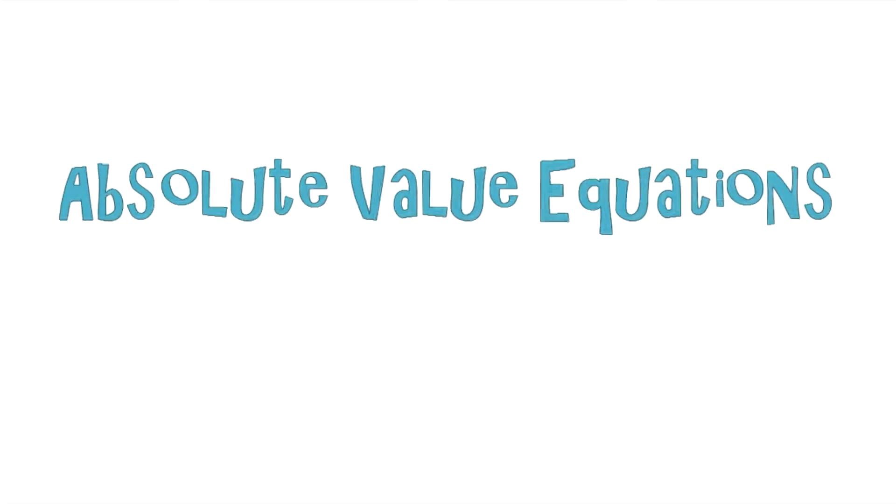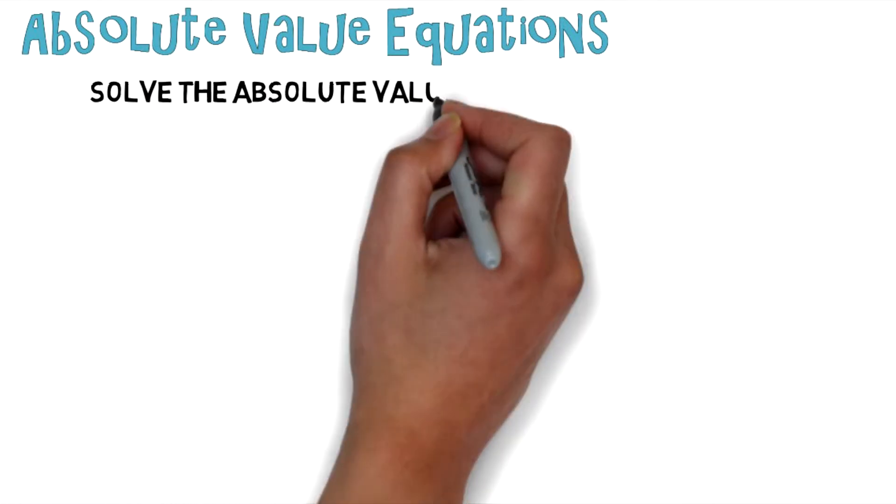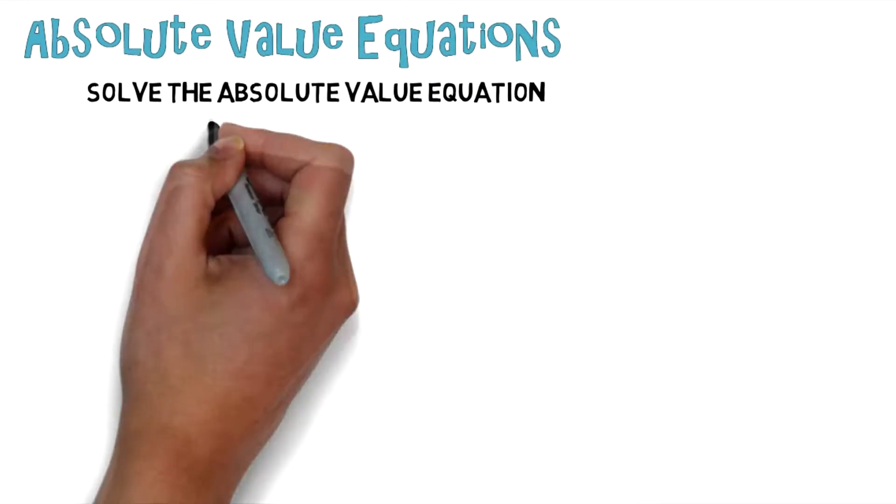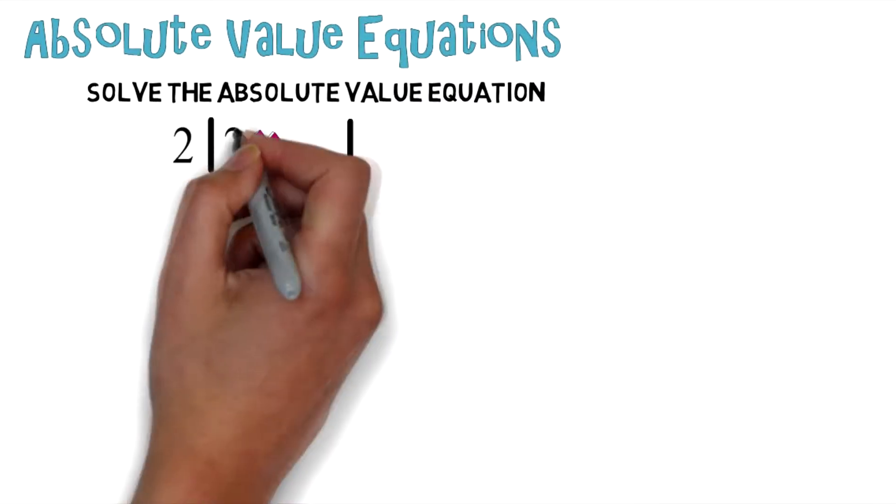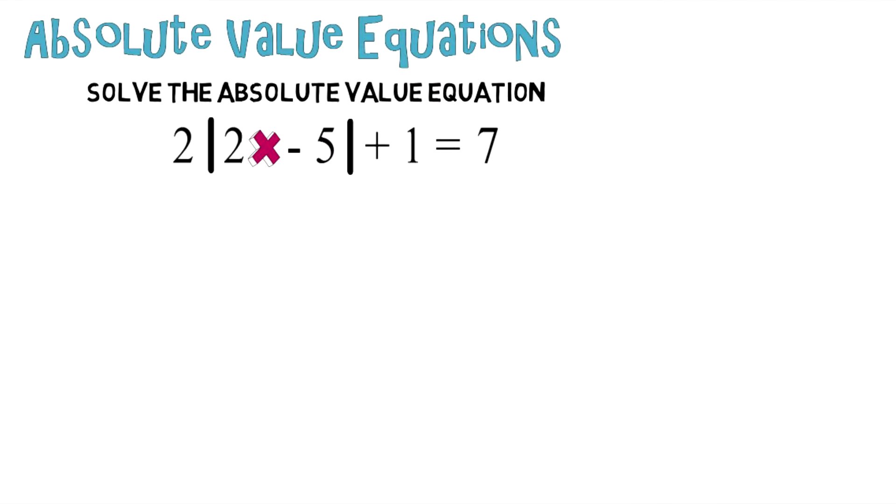Absolute value equations. Solve the absolute value equation. You're given the following equation located below, which comes out to 2|2x - 5| + 1 = 7.